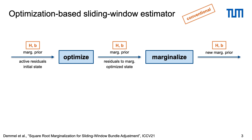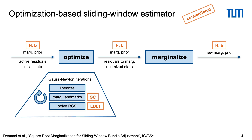After that, a subset of the residuals is marginalized and old frame and landmark states are dropped to keep the sliding window size bounded and ensure real-time operation. The result is a new marginalization prior for the next optimization window.